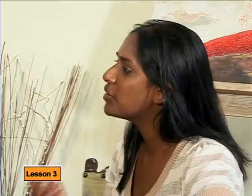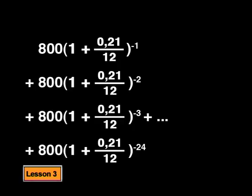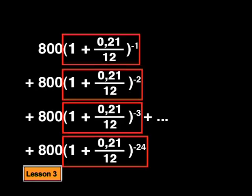To work out the actual present value of the loan, you would add all the monthly payment terms together. Isn't it the same as what we did for the future value annuity? Is this also a geometric series? I think it's geometric because there is a common ratio between each term. The terms all decrease by a factor of (1 + 0.21/12) to the minus 1.